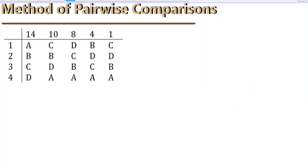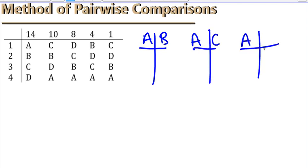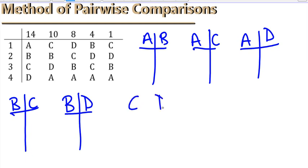So, let's list out the six pairs. We have A versus B, A versus C, A versus D, B versus C, B versus D, and C versus D. So, that's all six of our pairs.